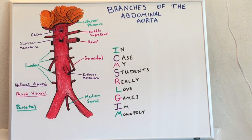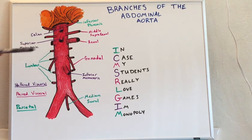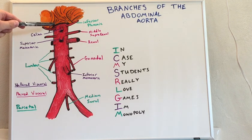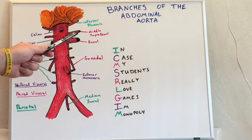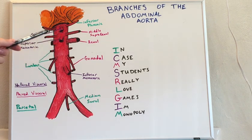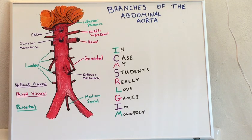These branches can be divided into unpaired visceral, shown here in purple, paired visceral in pink, and parietal in green. The unpaired visceral implies that the branches are on the anterior surface of the descending aorta. Paired visceral in pink shows that there are a pair of these vessels coming off the aorta, and the parietal shows that it is on the posterior or parietal side of the descending aorta.